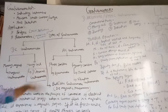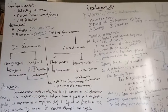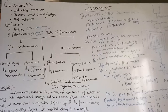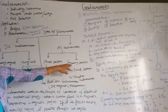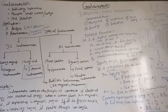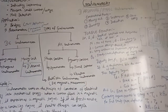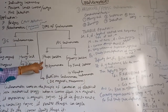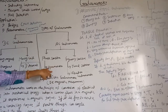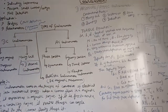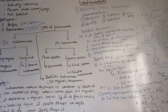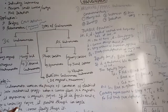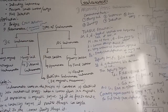AC galvanometer is further divided into phase sensitive and frequency sensitive galvanometer. If phase sensitivity is applied, then it is called AC galvanometer, and if the frequency of the supply source is varying, then it is called frequency sensitive galvanometer.